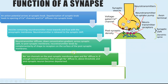On those receptors there are also sodium ion channels — it's actually a protein which is the sodium ion channel that also contains the neurotransmitter receptor. Once the neurotransmitter is bound, it causes these sodium ion channels on the post-synaptic membrane to widen, and because they're now wider, sodium ions are able to move from the synaptic cleft into the post-synaptic neuron. If enough sodium ions diffuse in, you could reach that minus 55 millivolt threshold to trigger an action potential in the post-synaptic neuron.